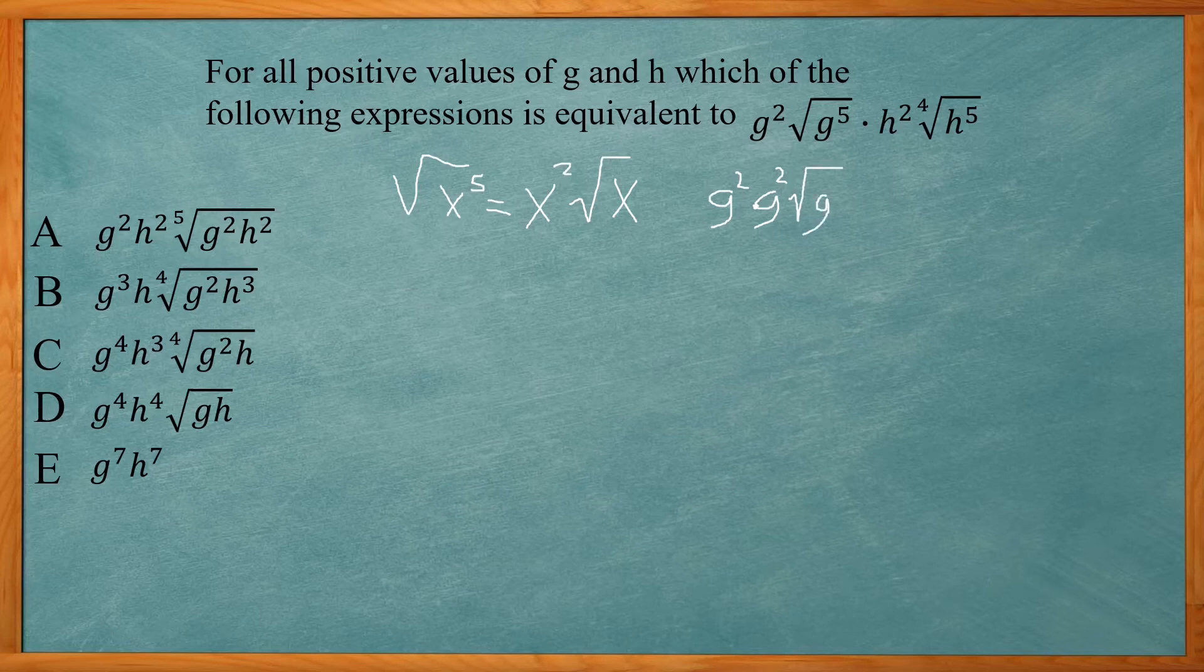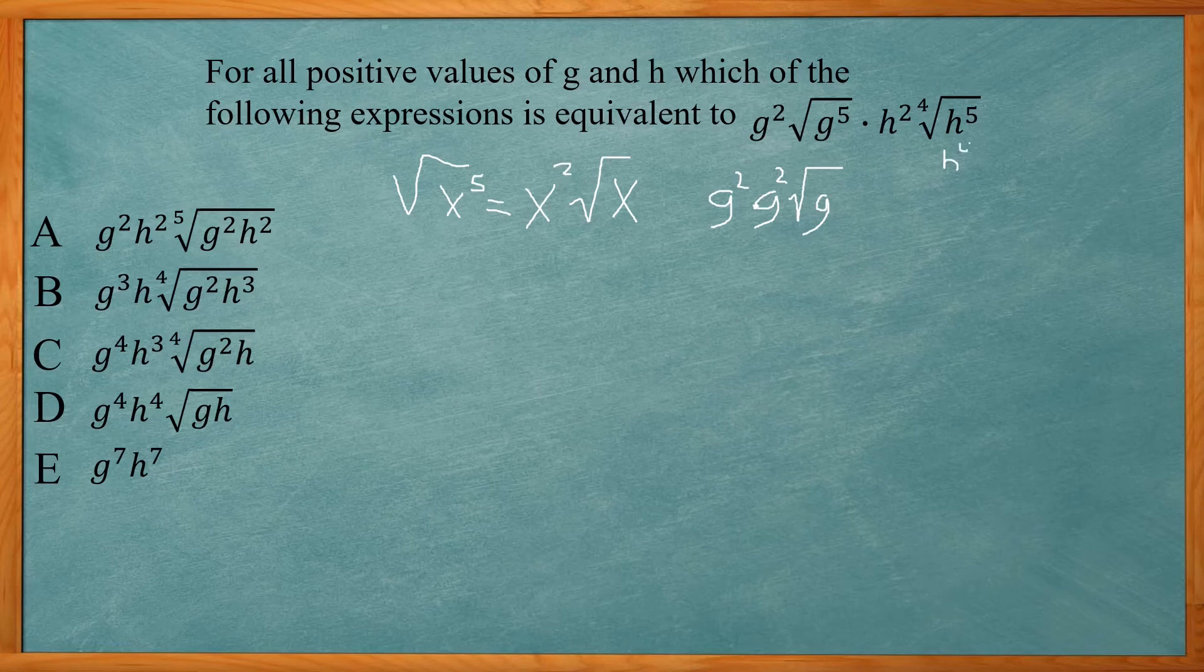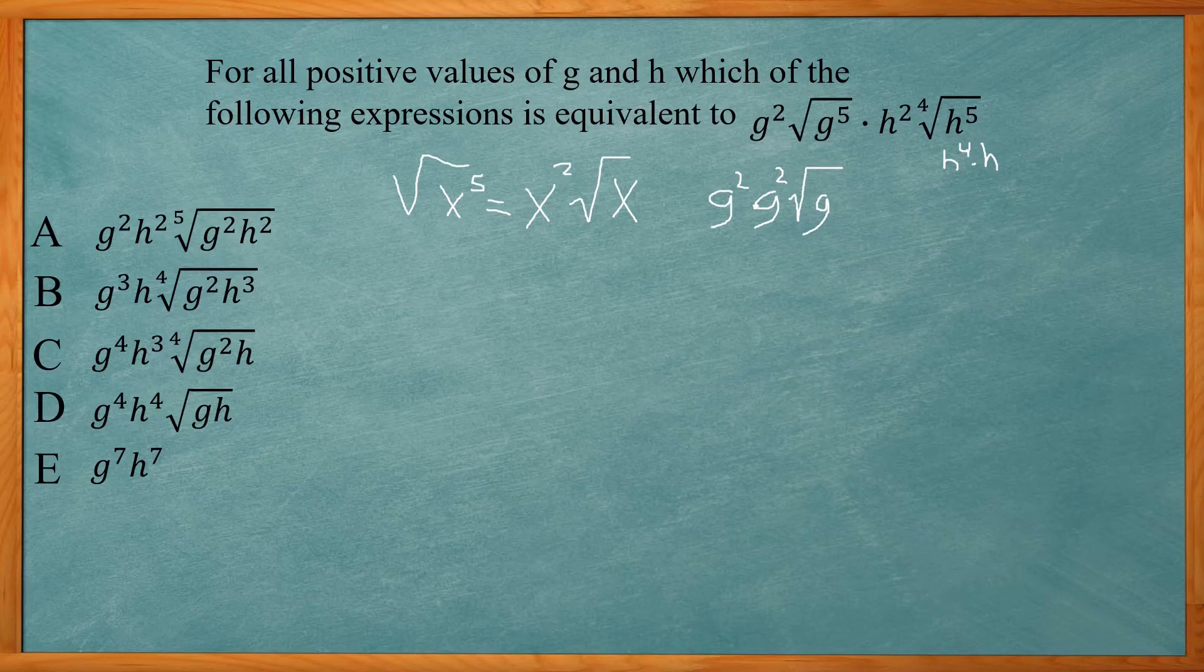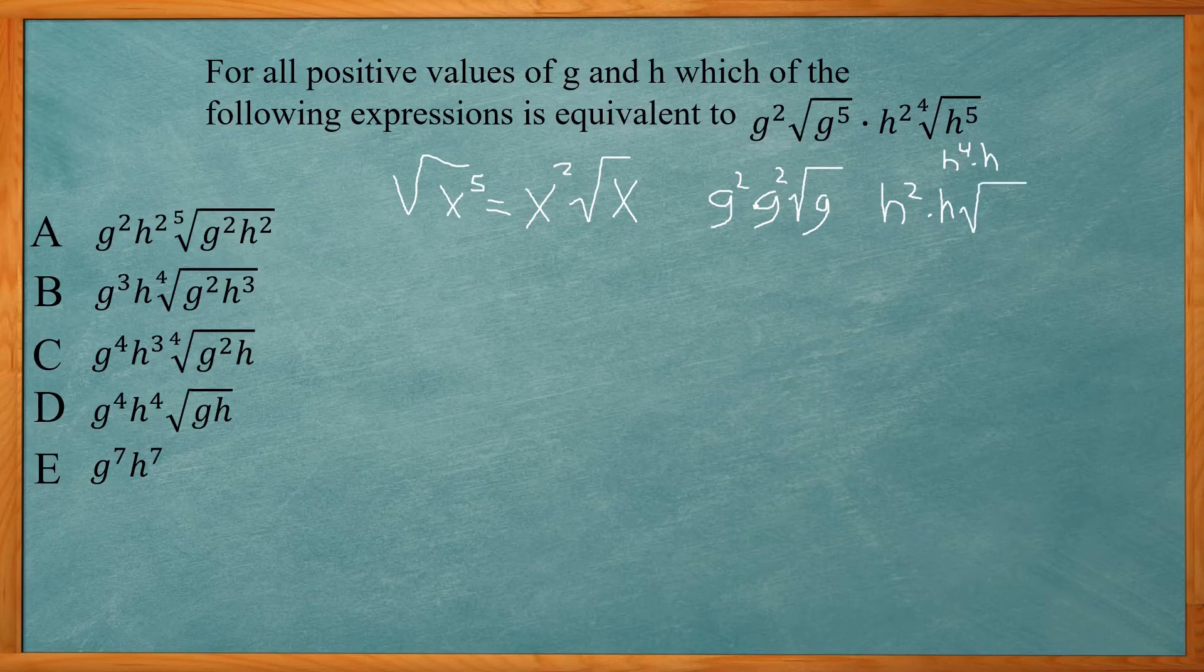Now here with the h, I have h squared, fourth root of h to the fifth power. Now I can rewrite that as h to the fourth, times h to the first power. So for every four h's that comes outside the radical as one. So I'll bring down the original h squared. And then it's going to be times h and the fourth root of h.